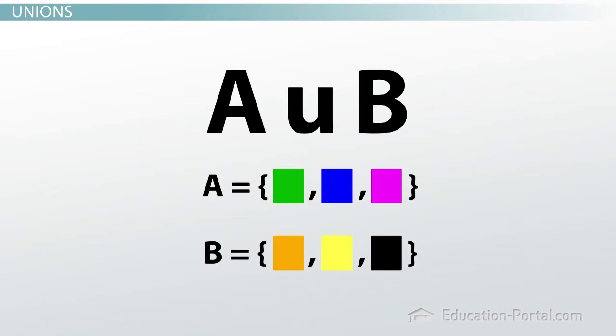A union B represents the union of sets A and B. And yes, that U symbol represents union! It's kind of handy. A union B represents all the elements that are listed in set A or in set B or in both.